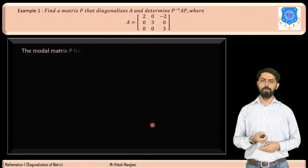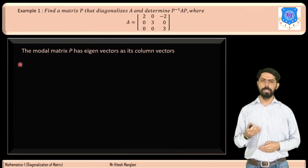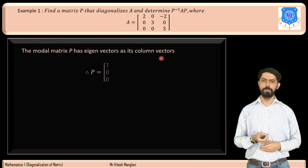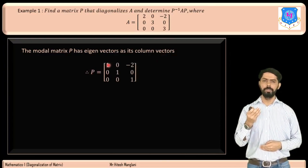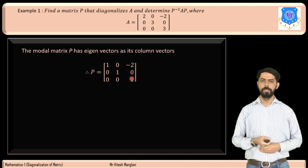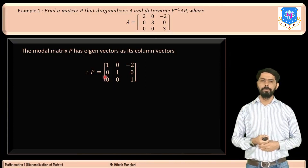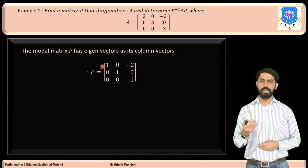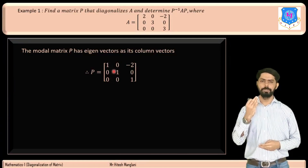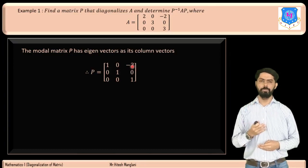Now we construct the modal matrix P by writing the eigenvectors as column vectors. The modal matrix P has first column [1, 0, 0]ᵀ (eigenvector for λ = 2), second column [0, 1, 0]ᵀ, and third column [−2, 0, 1]ᵀ (eigenvectors for λ = 3). So P = [1, 0, −2; 0, 1, 0; 0, 0, 1].